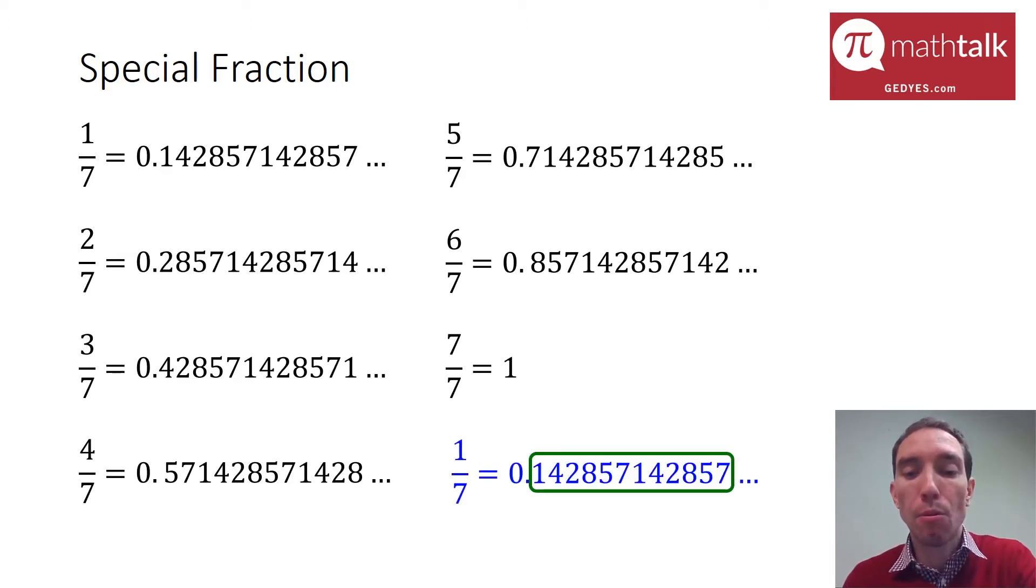You have one-seventh which is 0.142857 repeating. The other fractions are really just the same exact repeating set, just starting at a different point or different digit. Two-sevenths, you just move it over—you start at 2, so it's 0.285714. Three-sevenths, you start at the 4. Four-sevenths, you start at the 5. Five-sevenths, you start at the 7. And six-sevenths, you start at the 8.